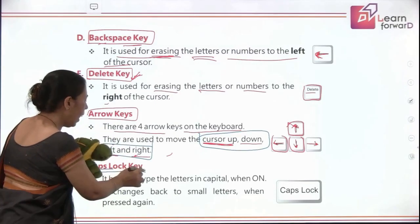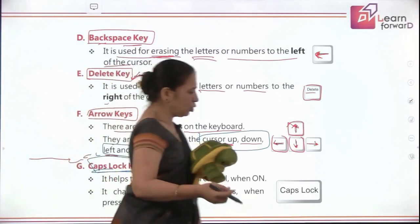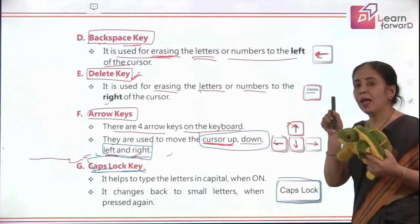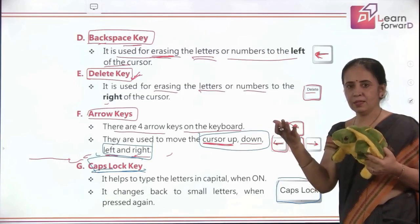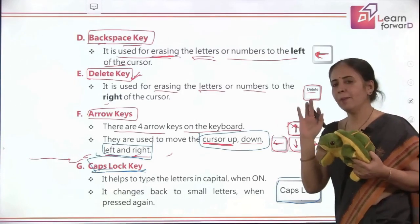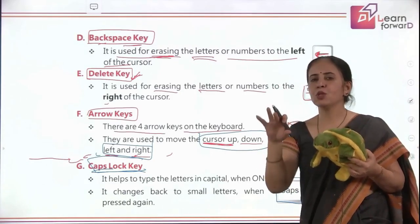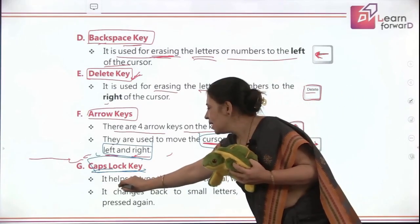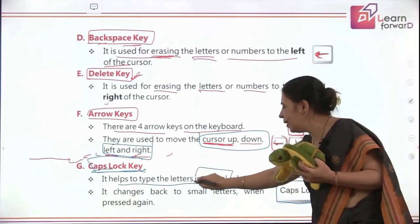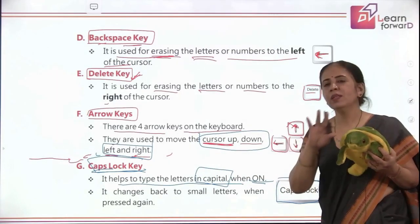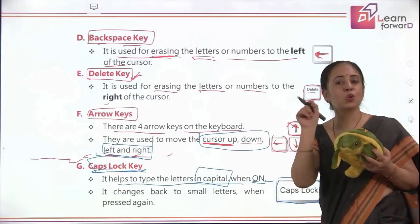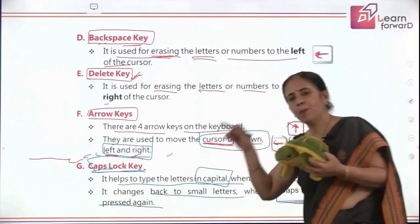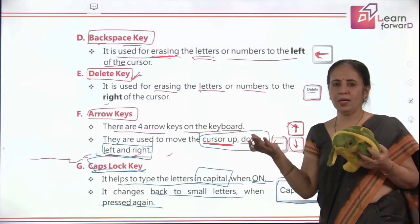Now we have another key called the caps lock key. Here is a caps lock button with the words 'caps lock' written on it. It helps you turn on capital letters when typing alphabets. It's a toggling button — one time you press it, caps lock turns on; another time you press it, caps lock turns off. When it is on, alphabets are typed in capital letters; when it is off, alphabets are printed in small, lowercase letters.